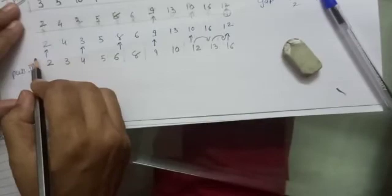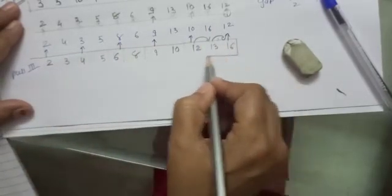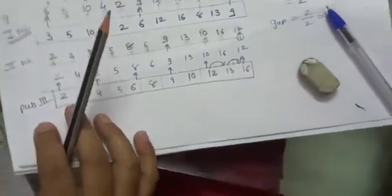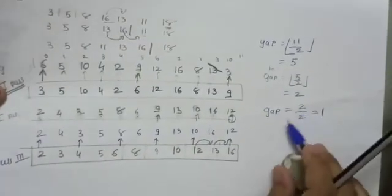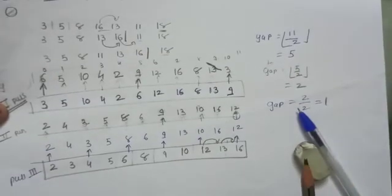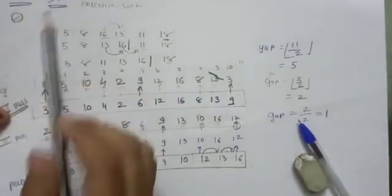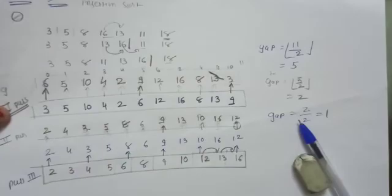So now as you can see, in third pass very few swaps are performed. So this is the main logic of shell sort. Ultimately we are performing insertion sort only, but with some gaps in the numbers. And in the last pass, we have to perform simple insertion sort. So that's all about shell sort.